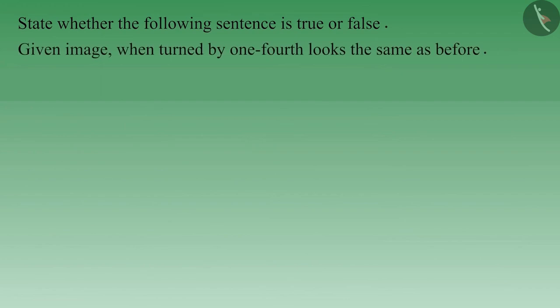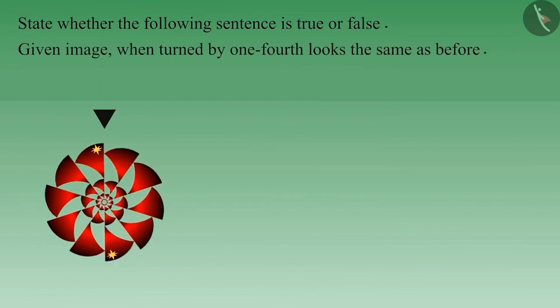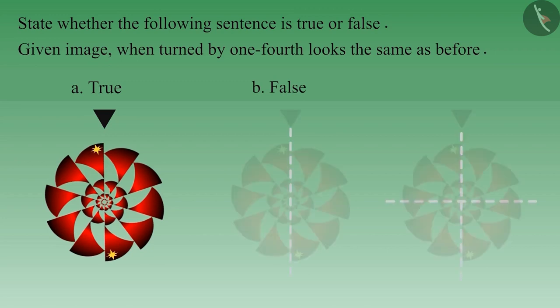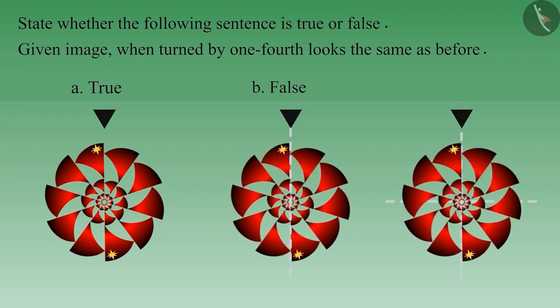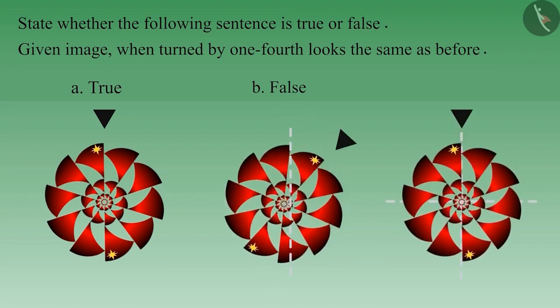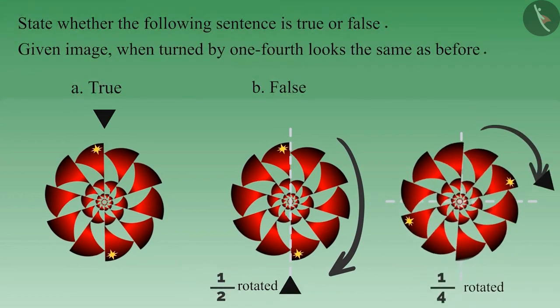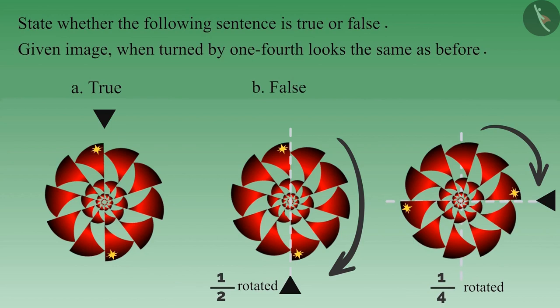Let's see another example: on rotating the given image by one-fourth, it looks the same as before. You can stop the video here and think about the answer. If you consider this statement as true, you must be thinking that on rotating the image by half it will look the same, and if it looks the same after rotating by half, then it will also look the same when rotated by one-fourth. But that is not so.